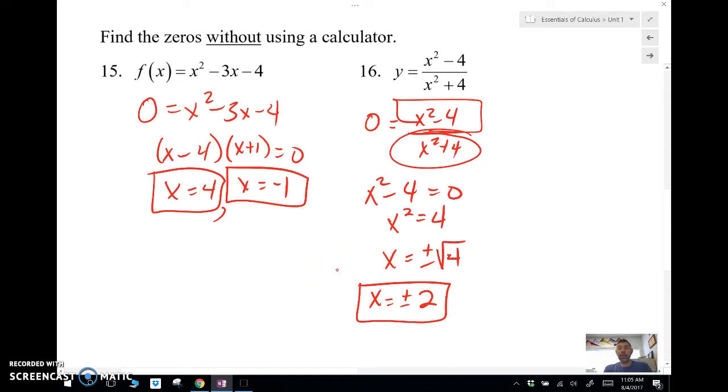Again, we would have to say this doesn't really matter here because this would give us domain restrictions. So we don't set that part, the bottom, equal to zero. We only worry about the top.